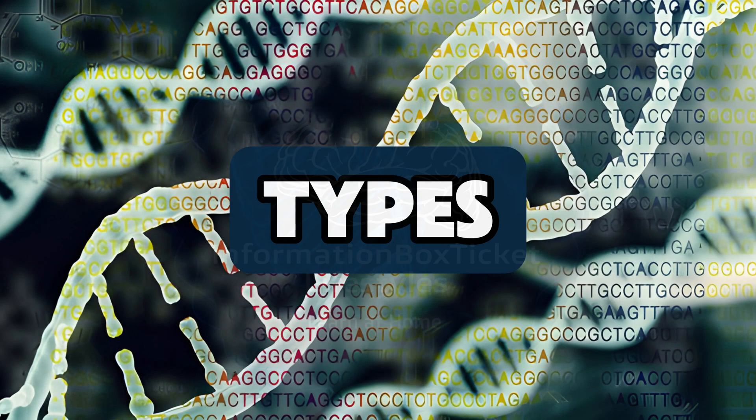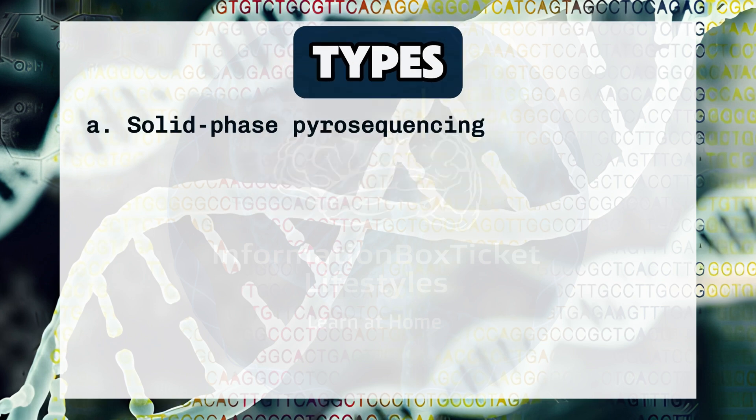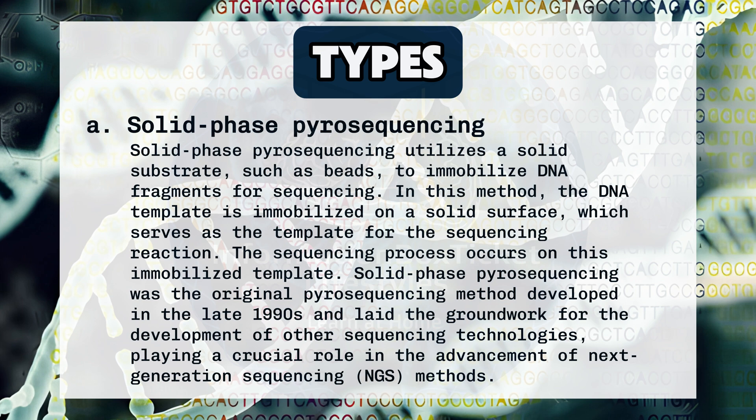Solid Phase Pyrosequencing utilizes a solid substrate, such as beads, to immobilize DNA fragments for sequencing. The DNA template is immobilized on a solid surface, which serves as the template for the sequencing reaction. Solid phase pyrosequencing was the original pyrosequencing method developed in the late 1990s and laid the groundwork for the development of other sequencing technologies, playing a crucial role in the advancement of next-generation sequencing (NGS) methods.